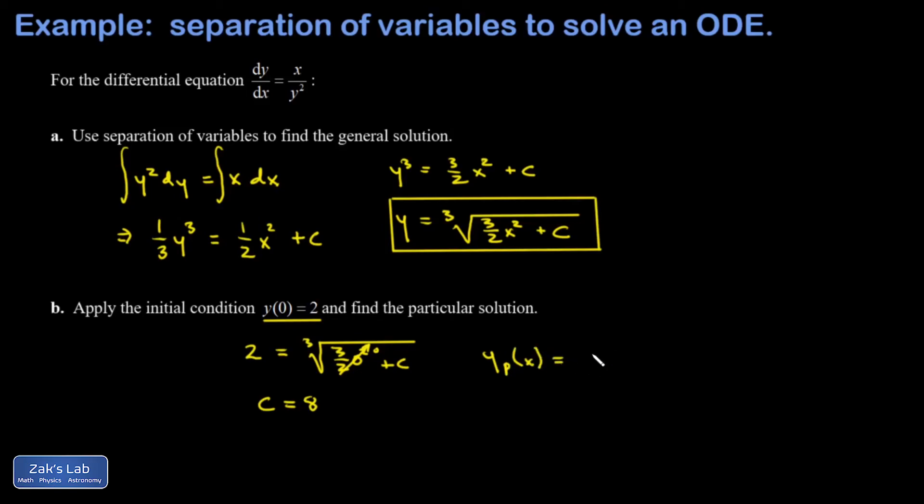I'll call it y_p of x, and that's the cubed root of three-halves x squared plus eight. That's the function that both satisfies the differential equation and passes through the point of interest, that initial condition, and we're done.